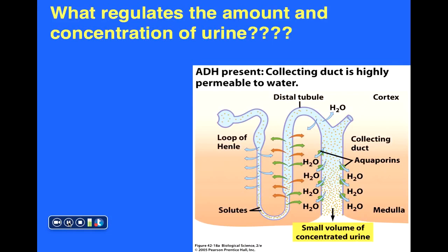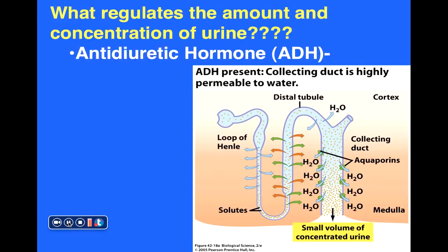What are some mechanisms that regulate the amount and concentration of urine our bodies produce? We'll mention one example: antidiuretic hormone, or ADH.